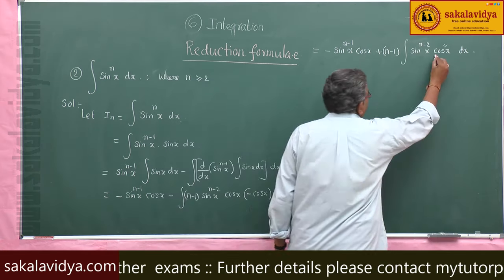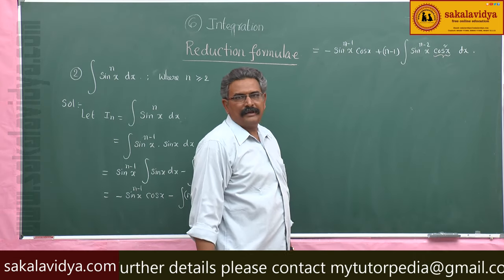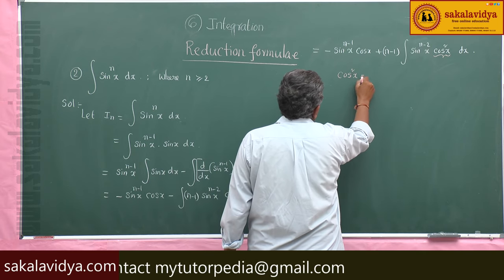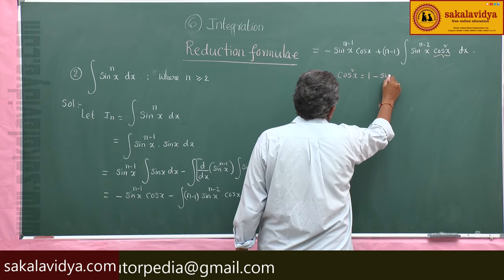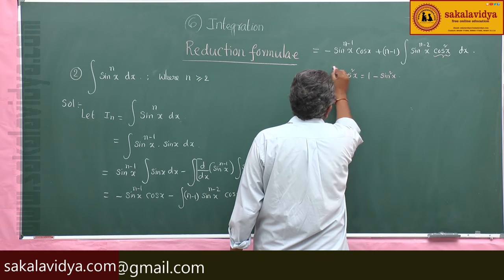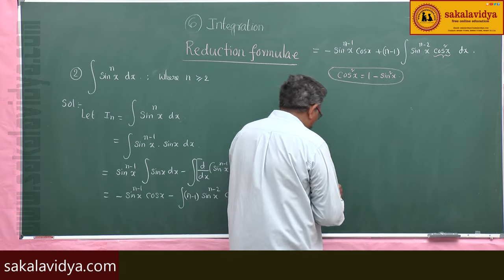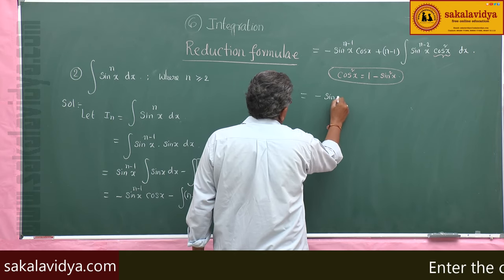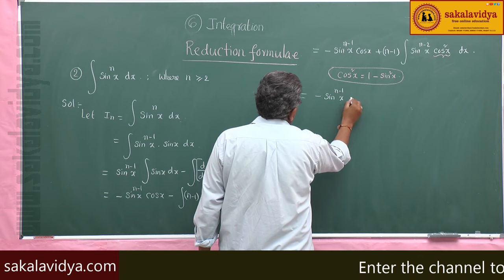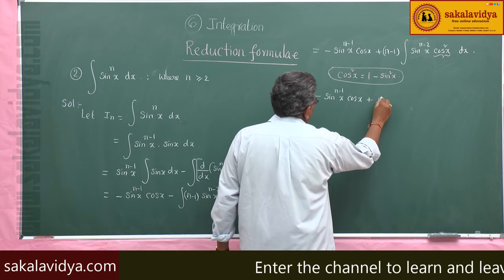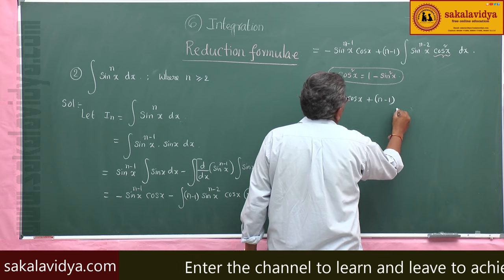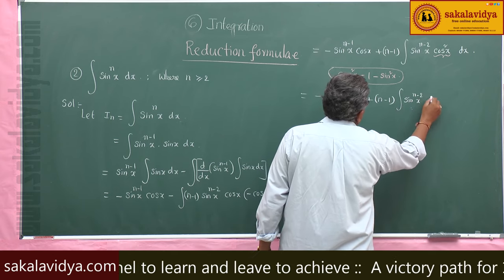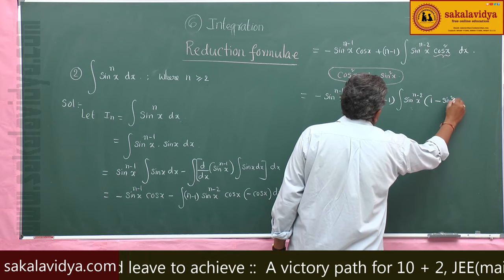Now, cos squared x can be replaced by 1 minus sin squared x. We know cos squared x is equal to 1 minus sin squared x. So this we can write as: minus sin x to the power of n minus 1 cos x, plus (n minus 1) times the integral of sin x to the power of n minus 2 into (1 minus sin squared x) dx.